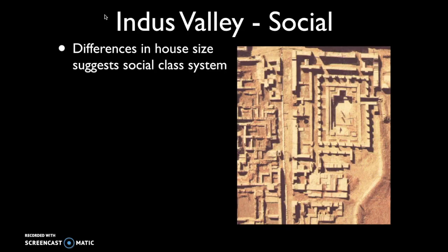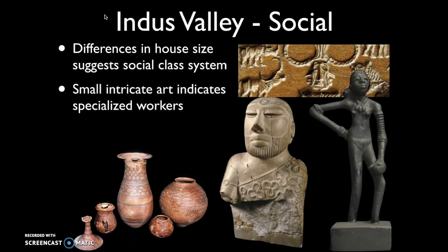In terms of social structure, we're left with more questions than answers. Archaeology does show differences in the size of residences and houses in cities like Mohenjo-Daro and Harappa, suggesting differences in social class — people with more wealth and power versus those with less, indicating the creation of a social hierarchy. We also know there was small, intricate art suggesting the presence of specialized workers creating fine pottery, fine sculptures, and bronze metallurgy.